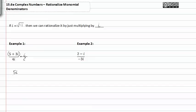5i plus 3i squared in the numerator and 4i squared in the denominator. This is great because now we know that i squared is negative one and we can put that in place of i squared.